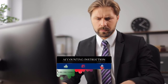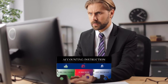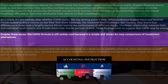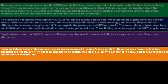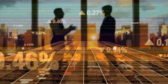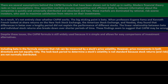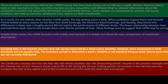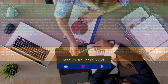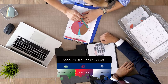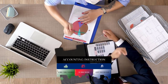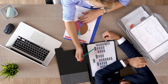You have to have some gauge when picking and choosing investments, and you want to think about areas where the formula might not be most appropriate. Including beta in the formula assumes risk can be measured by a stock's price volatility. However, price movements in both directions are not equally risky. The lookback period to determine a stock's volatility is not standard because stock returns and risk are not normally distributed — they don't follow a perfect bell curve.